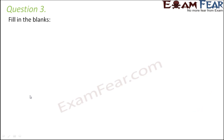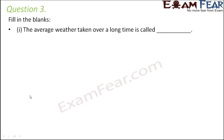Question number three — fill in the blanks: the average weather taken over a long time is called climate. That is how climate differs from weather. Weather is always on a daily basis and changes daily. When we talk about environmental conditions of a particular day, we are talking about weather. When we talk about average weather over maybe 20 to 25 years, that's the climate of that place.